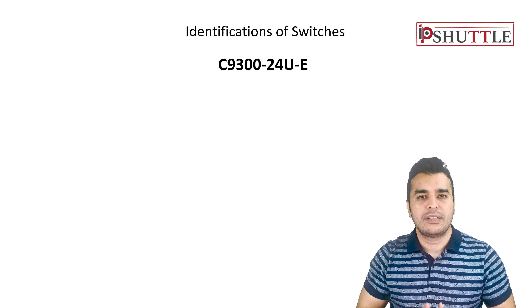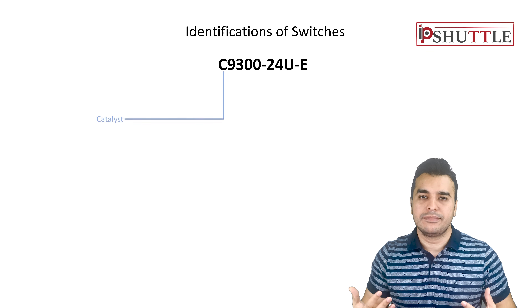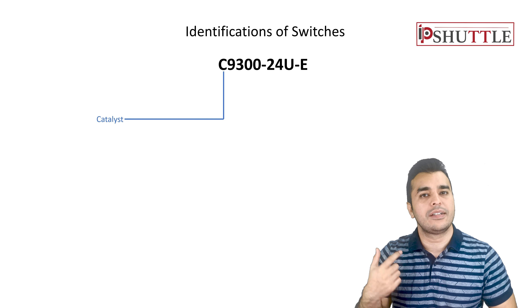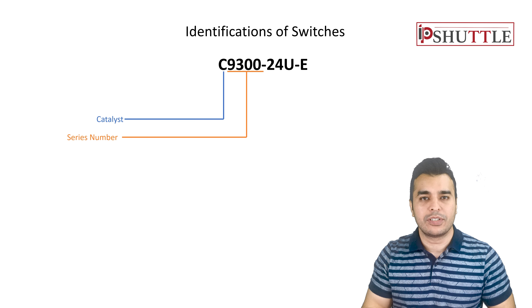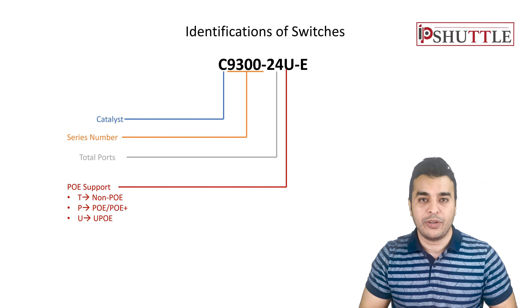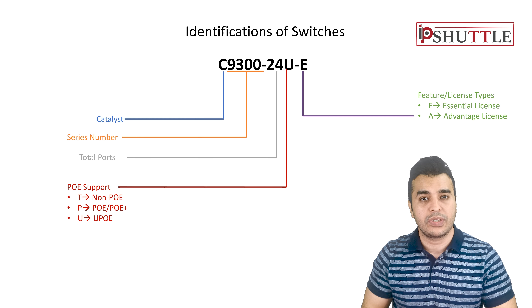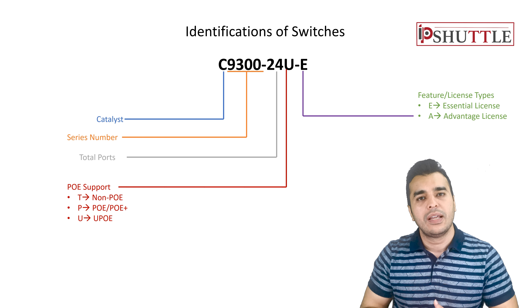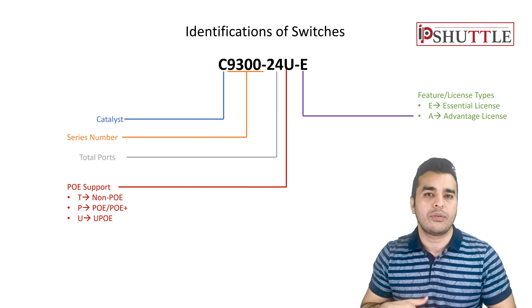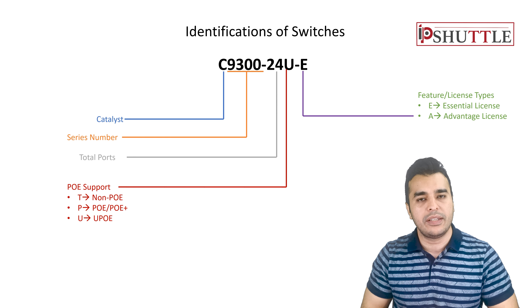The next example is from the 9300 series, one of the latest Cisco switch lines. C means Catalyst, 9300 is the part number, 24 is the port count, and U indicates it is UPoE-based. The last part refers to the license — either Essential or Advantage. Essential means layer 2, while Advantage includes layer 3 features like running routing protocols and maintaining a routing table, though NAT is not supported.